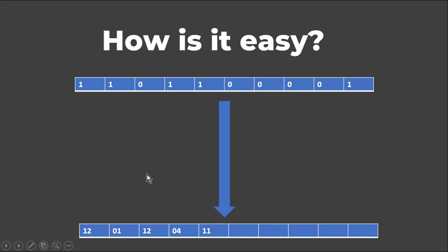So there have been 2 repetitions, so we would be writing 1 2. The next value is 0. Since this 0 has not been repeated, we would be writing 0 and it has been repeated only once, so 0 1. Now we go to the next value which is 1, and again this 1 has been repeated 2 times, so we write 1 2. Going to the next position which is 0, we can see that there have been 4 repetitions, so we write 0 4. Finally we have 1, and since this 1 has been repeated only once, we write 1 1.